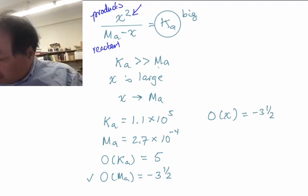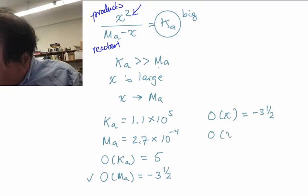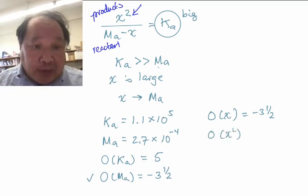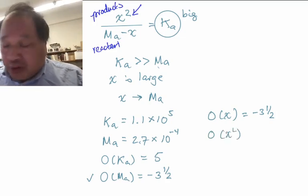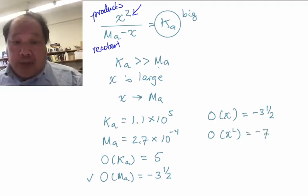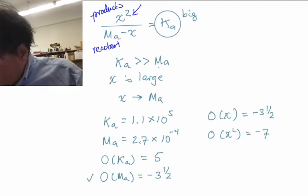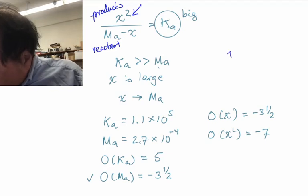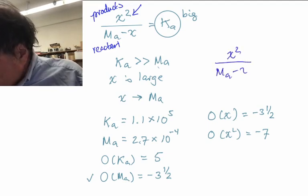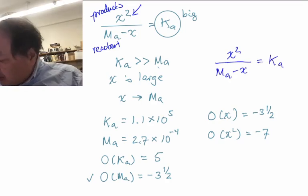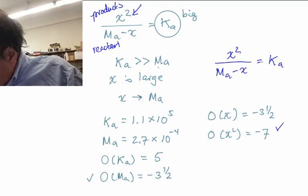That means the order of magnitude of X squared - the squared order of magnitude is almost the double of the order of magnitude of the original number - so it's minus seven. We now have the following scenario: X squared divided by Ma minus X equals Ka, and we have the order of magnitude of X squared is minus seven.